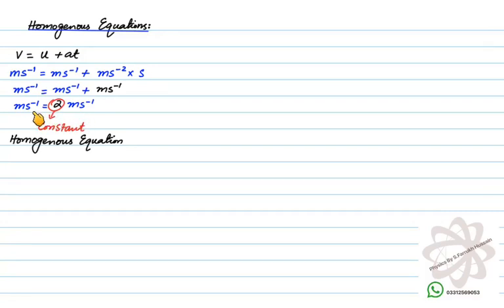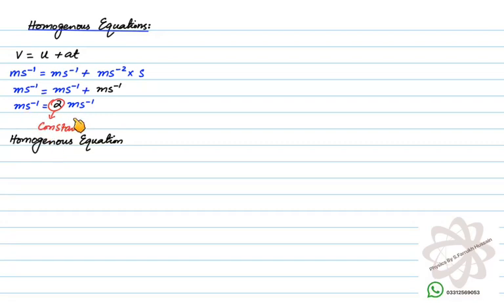As you can see, the unit on the left-hand side and the unit on the right-hand side are both equal. The constant (2) does not change the homogeneity of the equation. Any homogeneous equation will have the same units on either side. All equations we study in physics are homogeneous in nature — if they are not homogeneous, they are not valid.